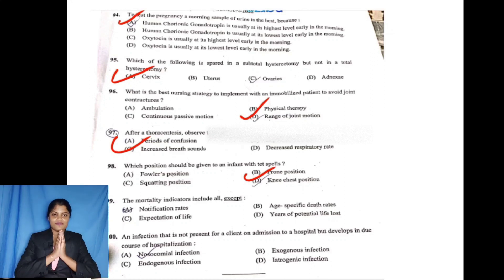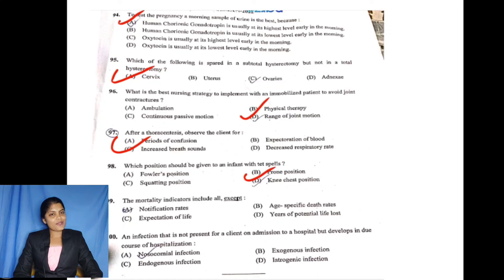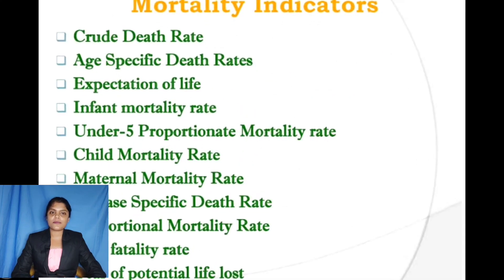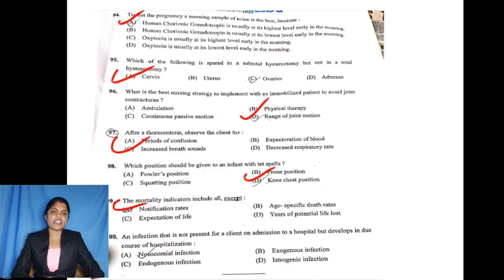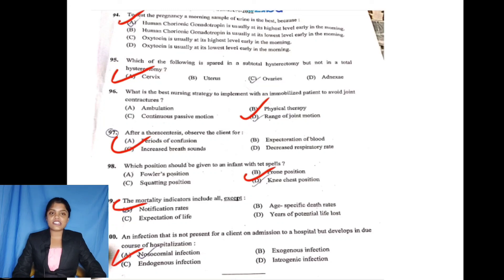Question 99: Mortality indicators include all except — notification rate, expectation of life, age-specific death rate, and sex-specific death rate. Notification rate is not a mortality indicator. A nosocomial infection is one not present in a client on admission to a hospital but develops due to the course of hospitalization — endogenous, exogenous, or iatrogenic. This concludes the clinical portion.